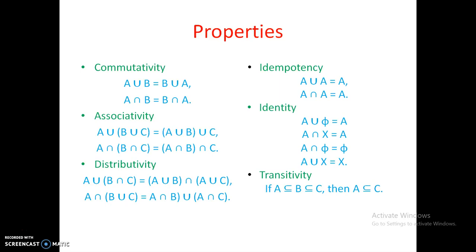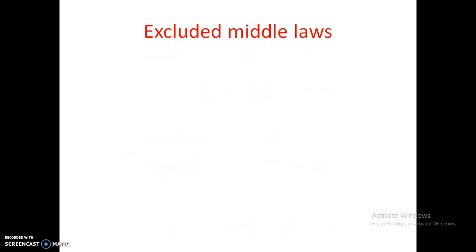Coming to transitivity: if A is a subset of B and B is a subset of C, then A is a subset of C. This is called transitivity. Next is involution: the complement of the complement of A is equal to A, written as (A bar) bar = A. These are the different properties for classical sets.